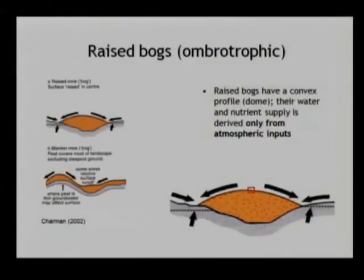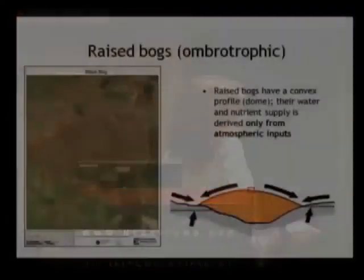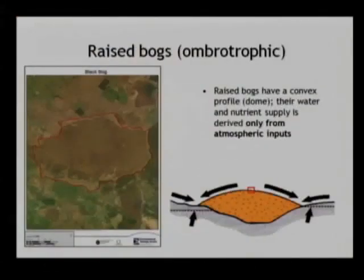The exciting thing about these raised bogs from a paleoclimate perspective is that the inputs into these bogs are entirely atmospheric. Unlike some bogs — for example a blanket bog, which would be subject to fluctuations in groundwater, inputs perhaps from springs or streams — the organisms growing on the surface of the raised bogs have their ecology and distribution entirely controlled by atmospheric inputs. So essentially, if we collect a core of sediment through the dome of a raised bog, we are looking at a record of atmospheric changes through time.